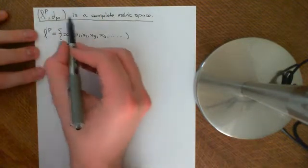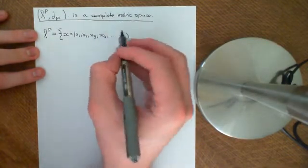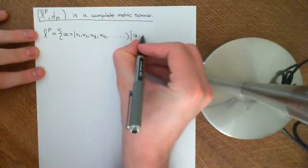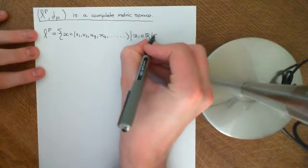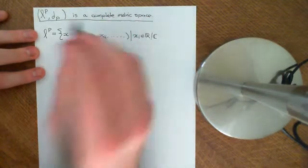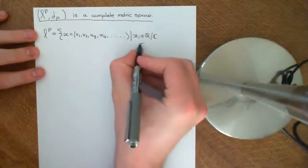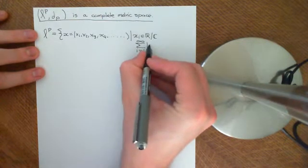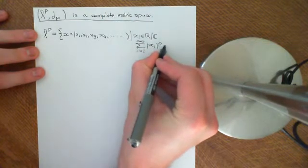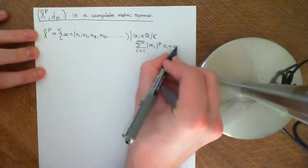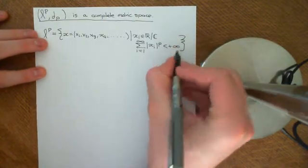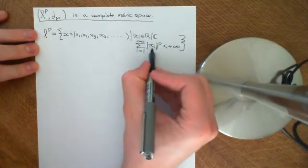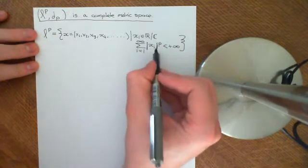Both the real and complex Lp space are complete metric spaces, so we're going to keep our discussion general. These entries are real or complex numbers, and these sequences have to obey some properties. The property they have to obey is that the sum from 1 to infinity of the modulus of all the terms — xi to the power of p — needs to be some finite value. If this is the real Lp space, this means the absolute value; if it's the complex Lp space, it means the complex modulus function.